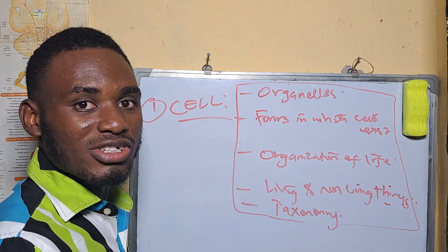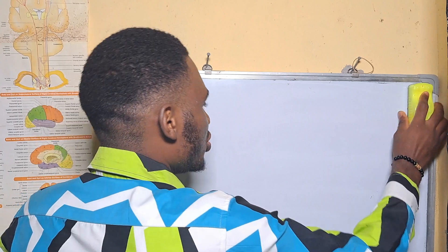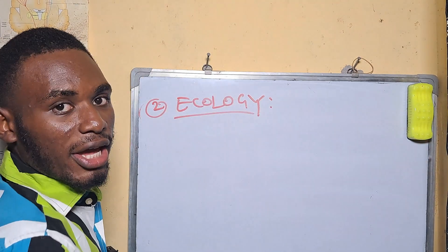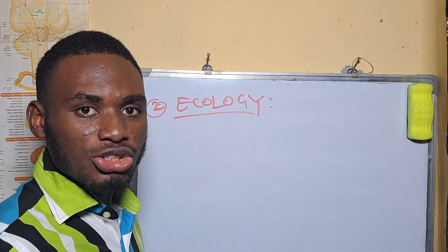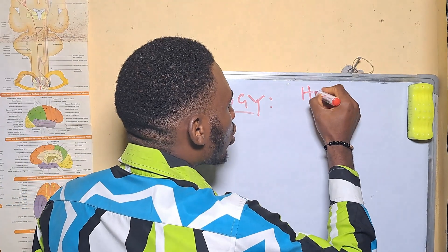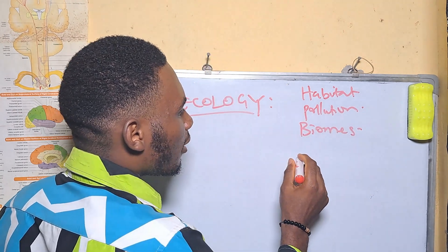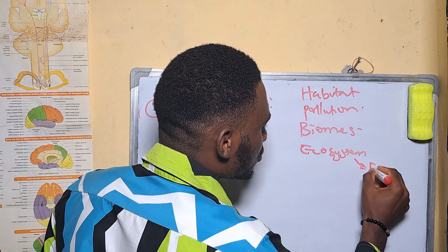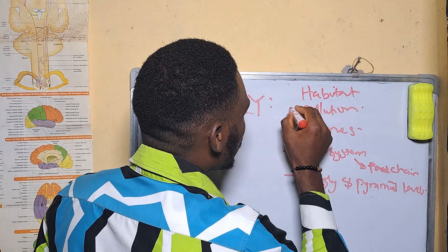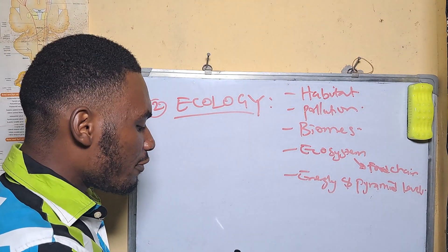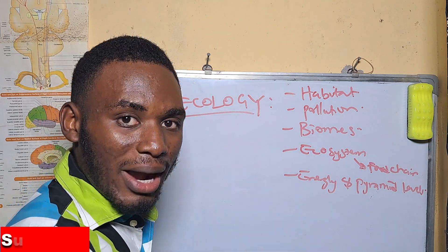Make sure you read up on cells before you go for your JAMB examinations. Secondly, also expressed in a red marker owing to its importance, is ecology. Like cell, ecology is an umbrella topic that has other subtopics in it. Ecology means the interaction between organisms and their environment. In ecology, we have topics like habitats, pollution, biomes, ecosystem which comprises the food chain, energy levels, and energy pyramid levels. These are some of the subtopics in ecology, which is also one of the most frequently asked topics in JAMB biology examinations.